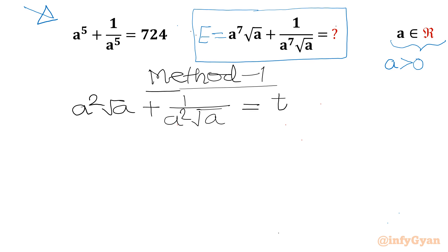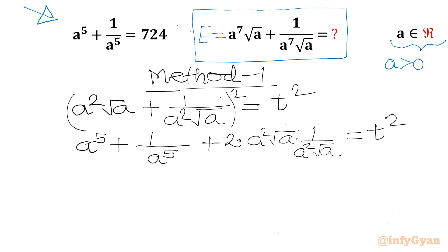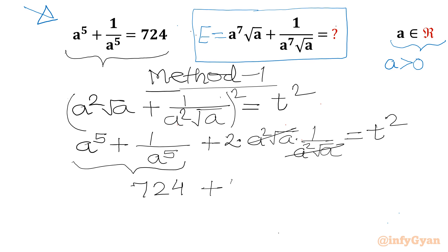Now let us consider squaring of this equation. So (a·√a)² gives a^5, and we get a^5 + 1/a^5 + 2·(a·√a)·(1/(a·√a)) = t². The middle terms cancel, so we can substitute a^5 + 1/a^5 = 724, giving 724 + 2 = t², so t² = 726.